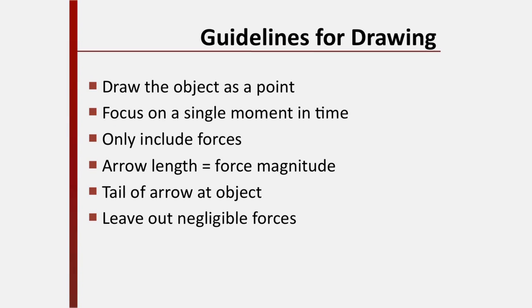Here are some guidelines to remember when drawing your free body diagram. Rather than trying to sketch an object in detail, we're always going to draw it as a single point. We focus on a single moment in time. Our diagram will only include forces and not any other vectors or any other quantities. The arrows we draw for the forces will be longer for stronger forces, and we'll always draw them as coming from the object. Finally, we'll want to draw only forces with a substantial impact on the object's behavior, and leave out any that are negligible.